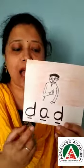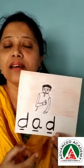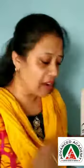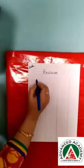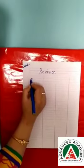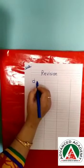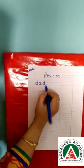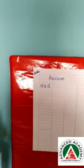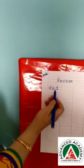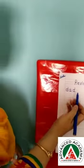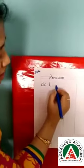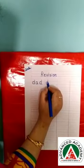D, A, D — Dad. So we will write now: D, A, D — Dad. You have to write four times: D, A, D — Dad.